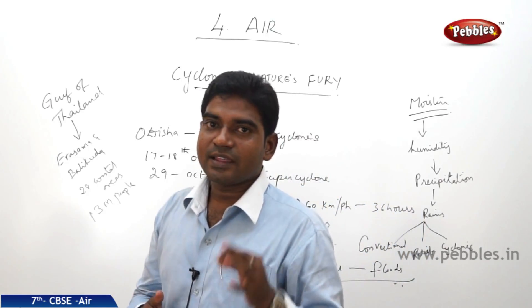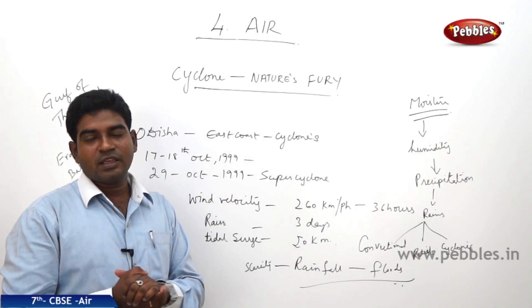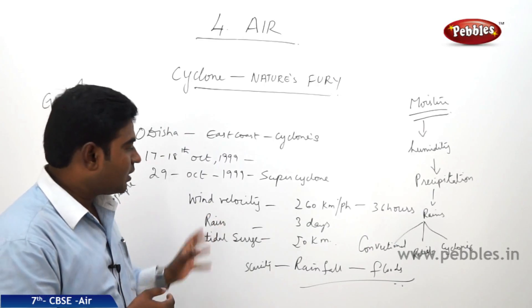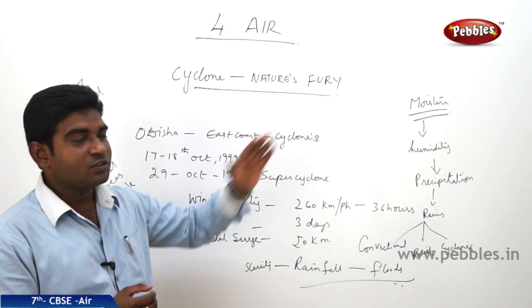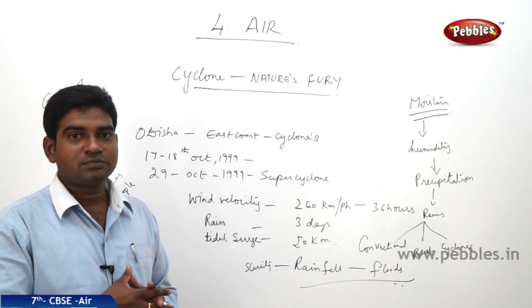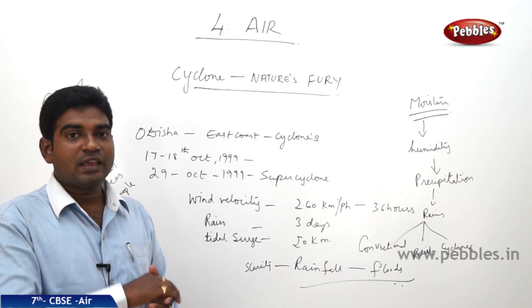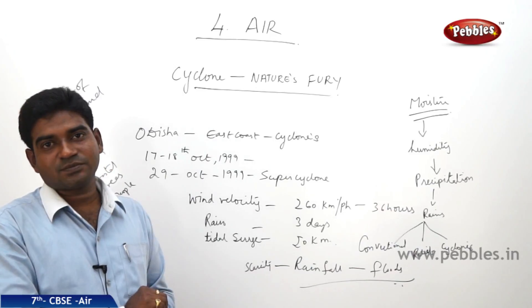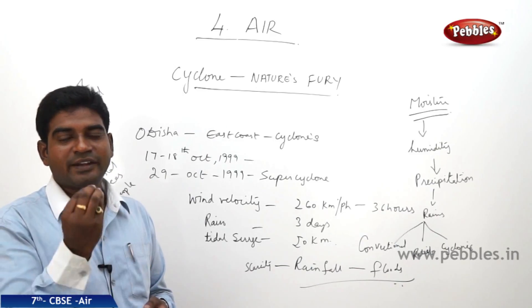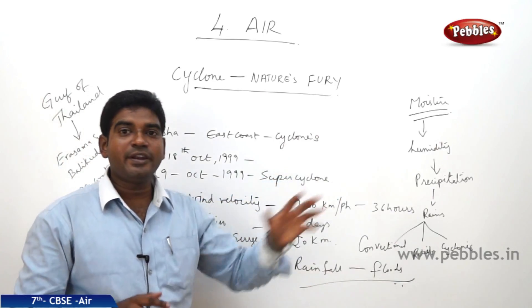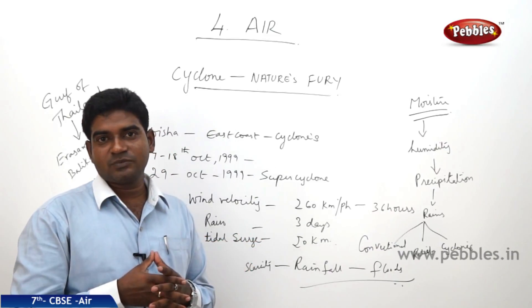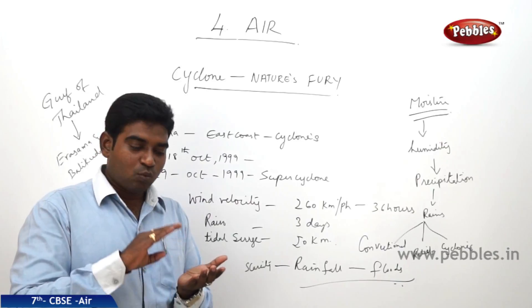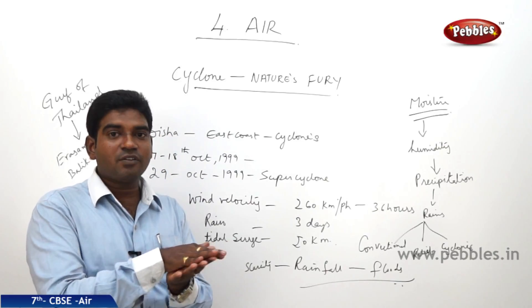Cyclone is a natural phenomenon which cannot be stopped. In the cyclone we heard the words rain and wind. Let us now learn about rain. The presence of water vapor in the air leads to moisture, and the presence of moisture at any given time at any given place is called humidity of that place. When water gets heated up, it gets evaporated and transforms into water vapor. These water vapors move towards the clouds.